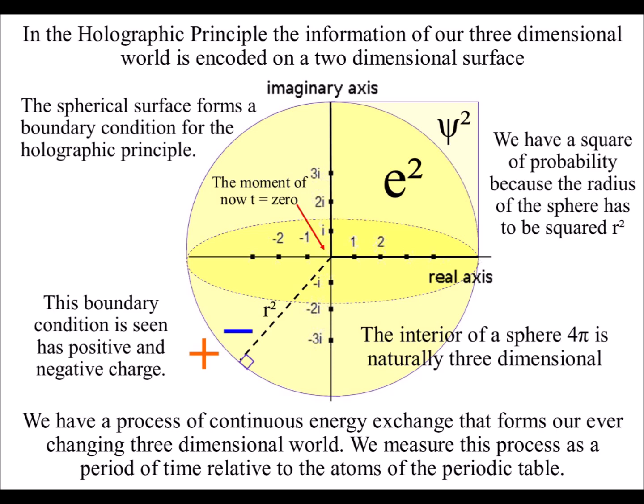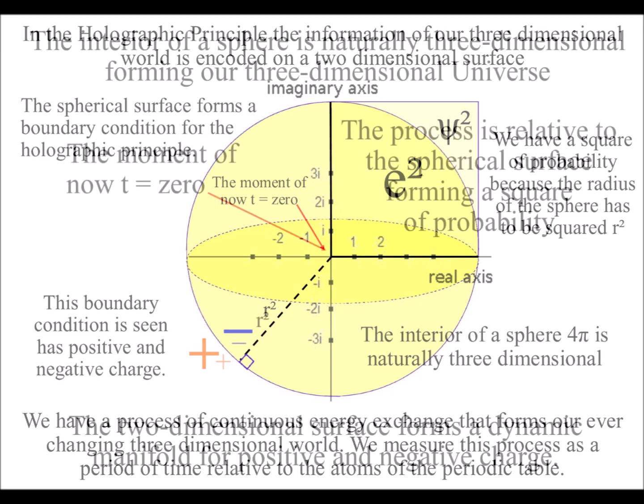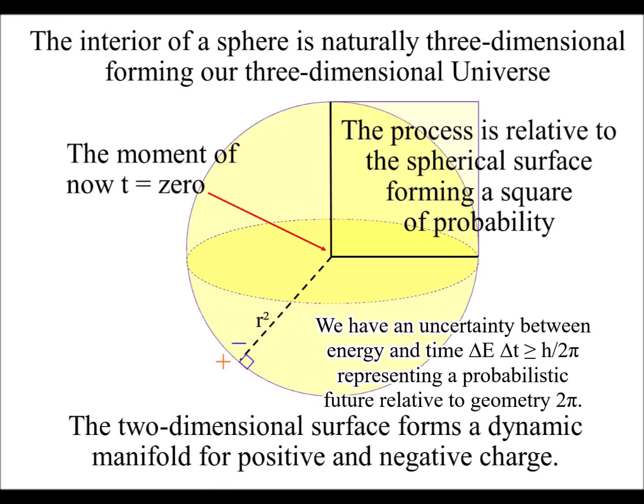The two-dimensional surface of the sphere forms a manifold for charge, with the inner concave surface forming negative charge, and the outer surface forming positive charge.